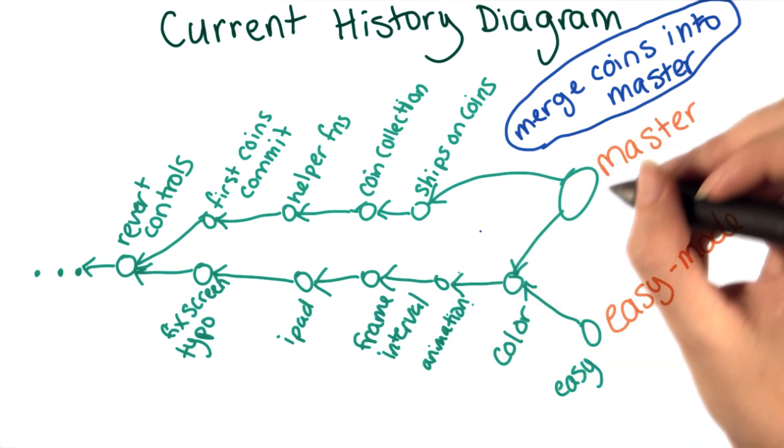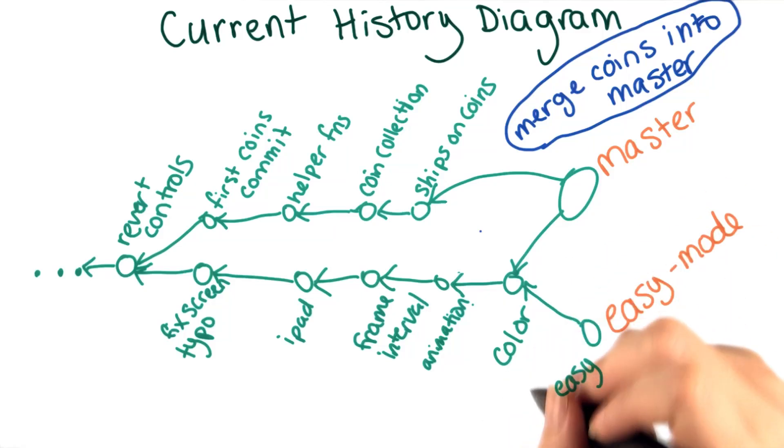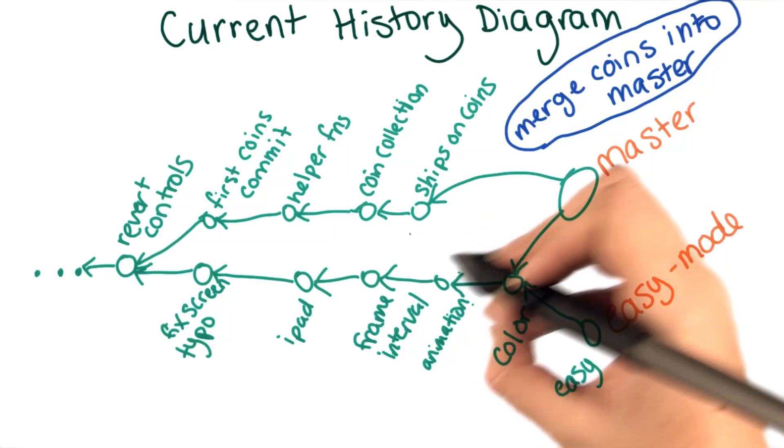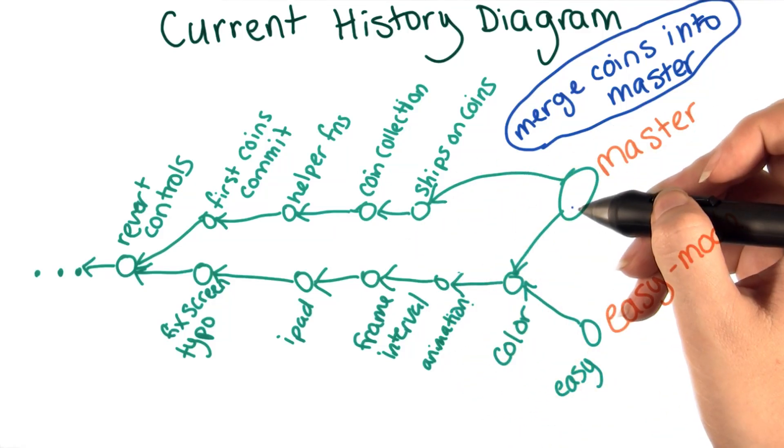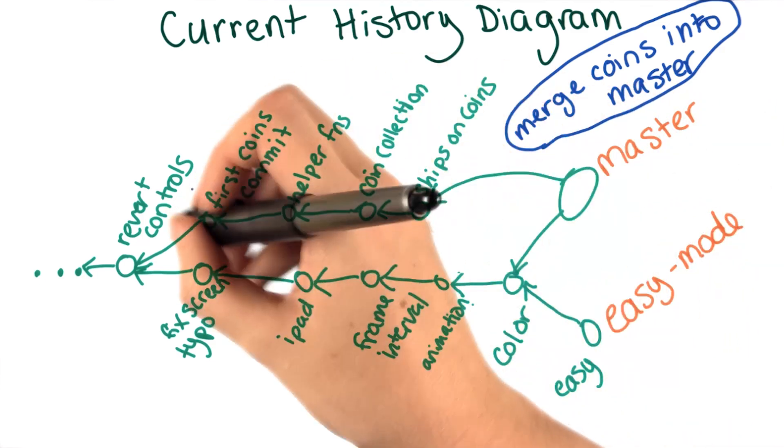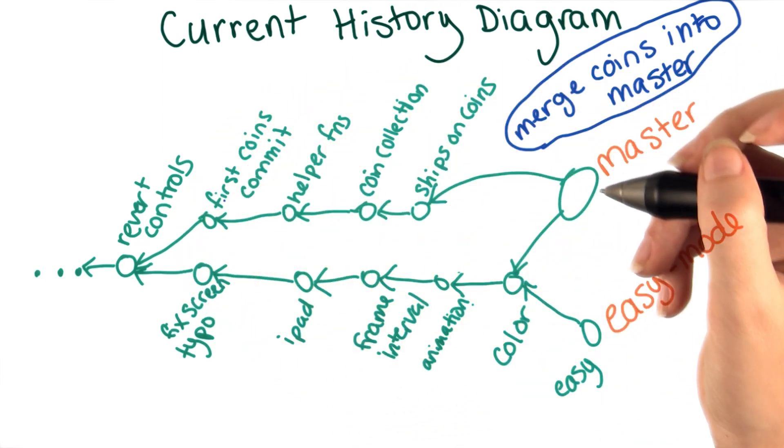However, if no branches can reach the commit, deleting a branch does effectively discard its commits. So if you deleted the coins branch without merging it in first, you would essentially be abandoning these commits, since they would all become unreachable.